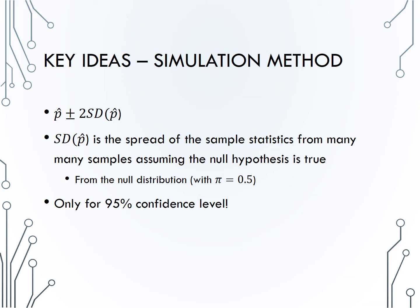And really, we should use a null distribution where pi is equal to 0.5 to give us the largest or most conservative standard deviation we could obtain. Also recall that this 2SD interval only works for a 95% confidence interval.